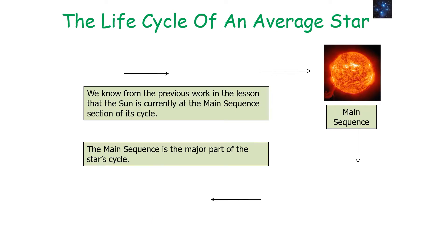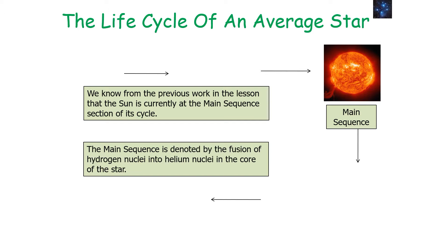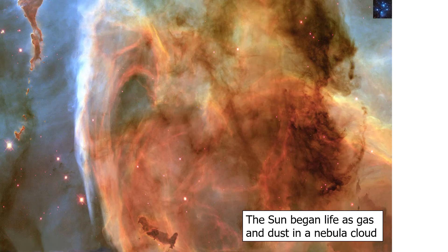The sun is currently at the main sequence section of its cycle. The main sequence is the major part of a star's life cycle, denoted by the fusion of hydrogen nuclei into helium nuclei in the core of a star. But the star doesn't start its life cycle in the main sequence — the sun and all other stars began life as a gas and dust cloud in a nebula.